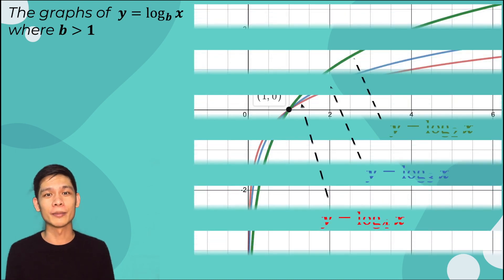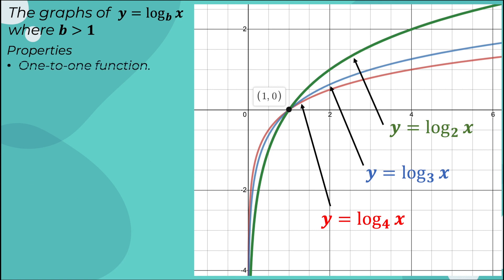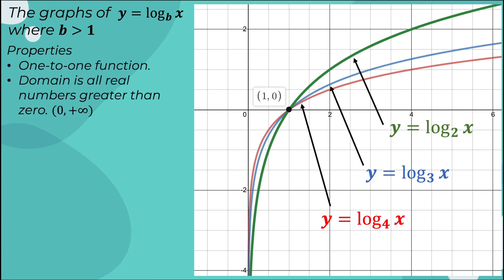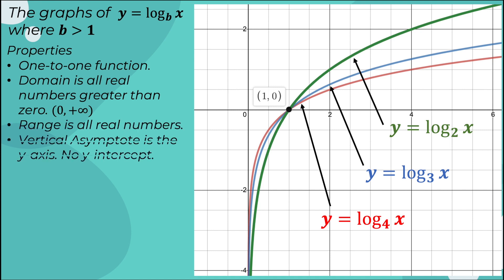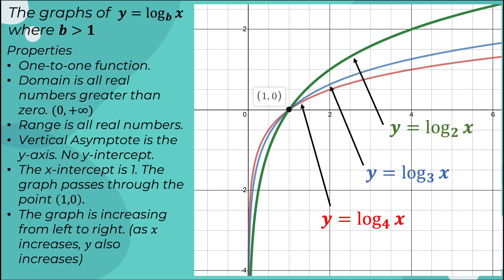Here is a summary of the properties of the graphs of y = log base b of x, where b is greater than 1. It is a one-to-one function. The domain is the set of all real numbers greater than 0. The range is all real numbers. The vertical asymptote is the y-axis, so there is no y-intercept. The x-intercept is equal to 1, meaning the graph passes through the point (1, 0). The graph is increasing from left to right, so as x increases, y also increases.